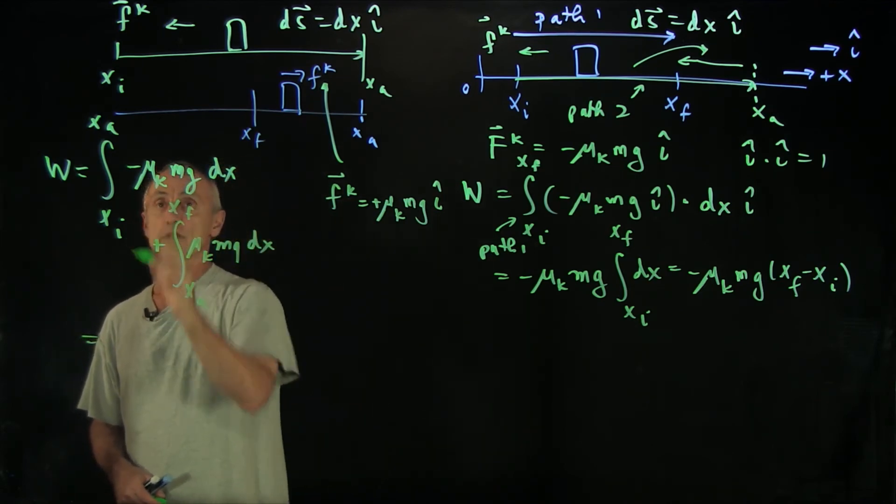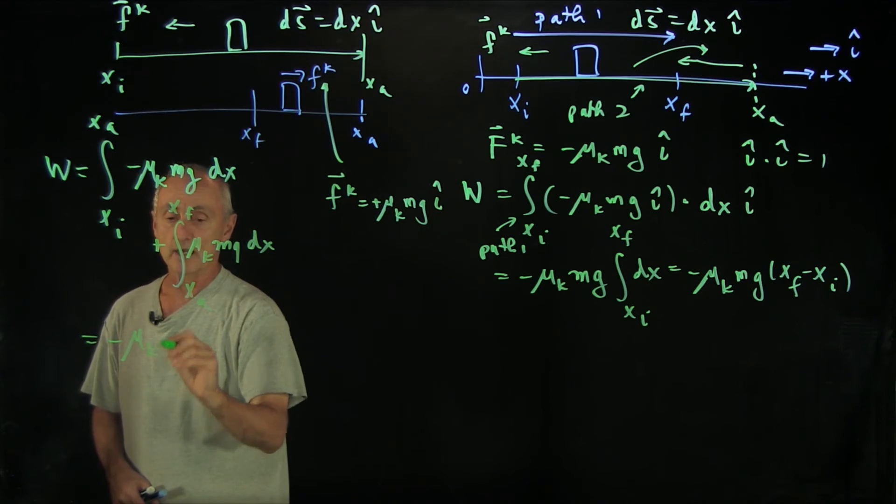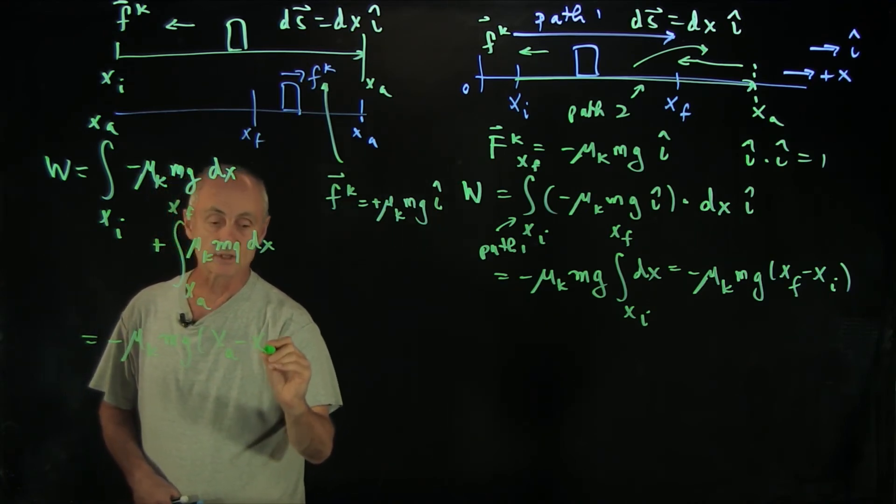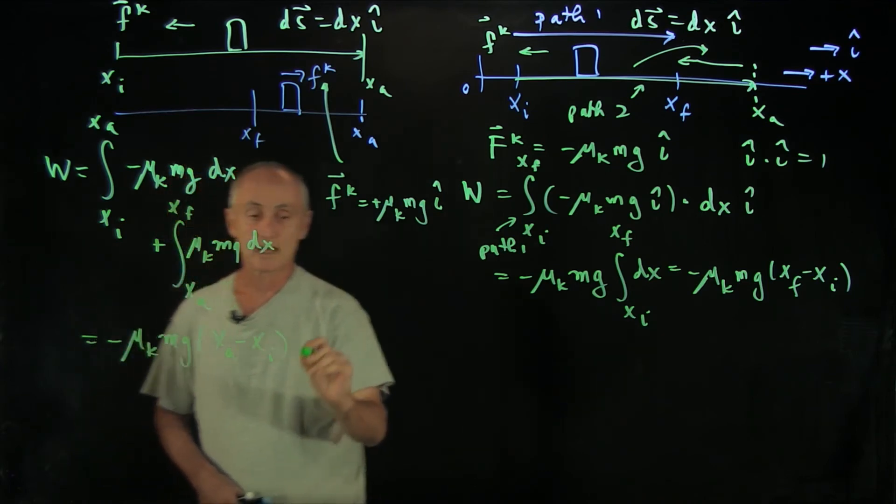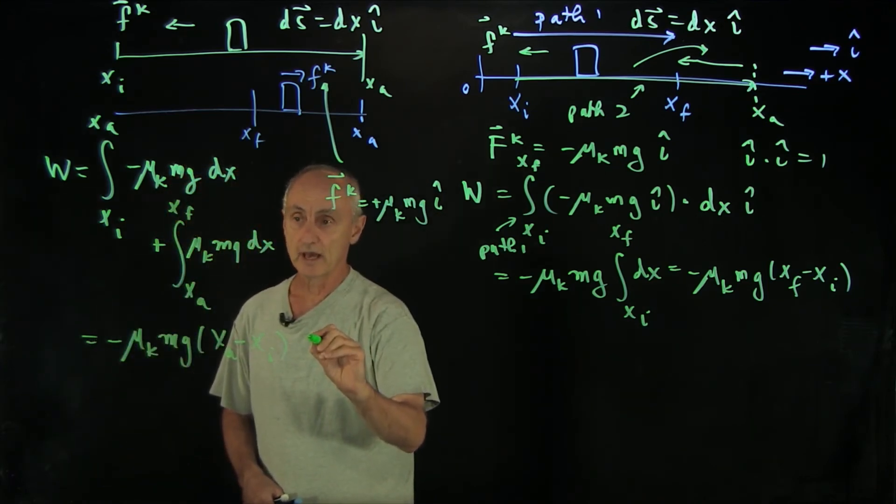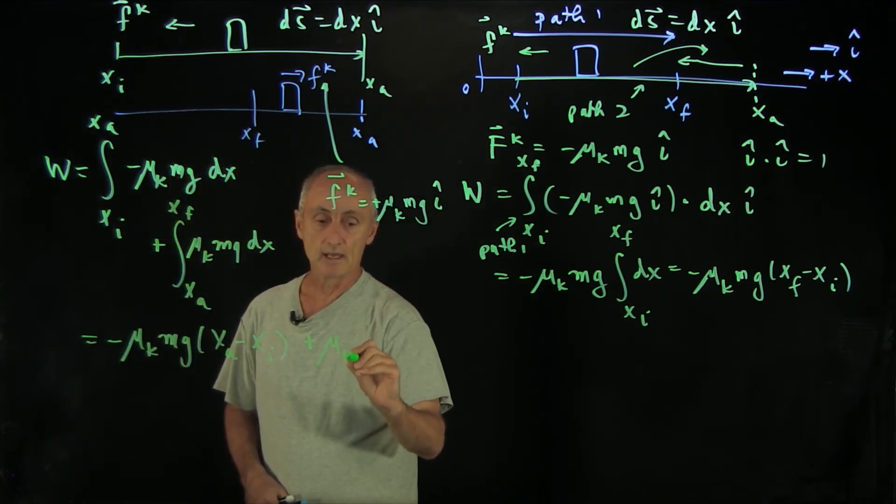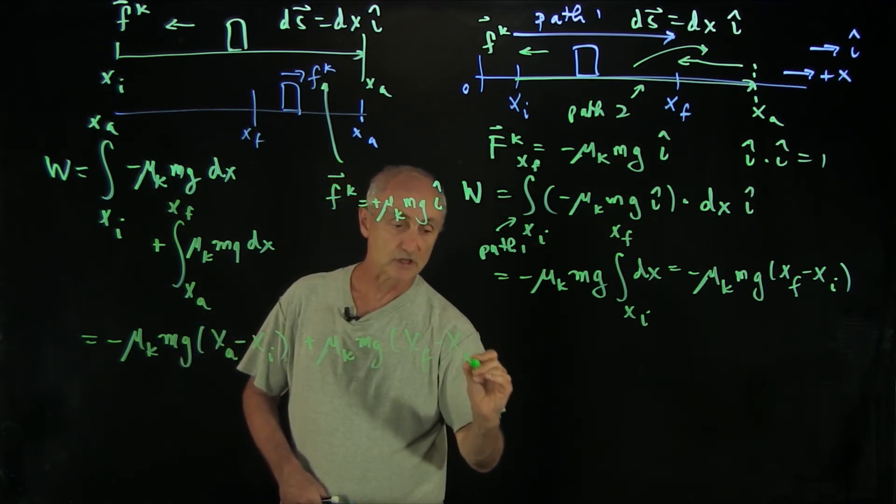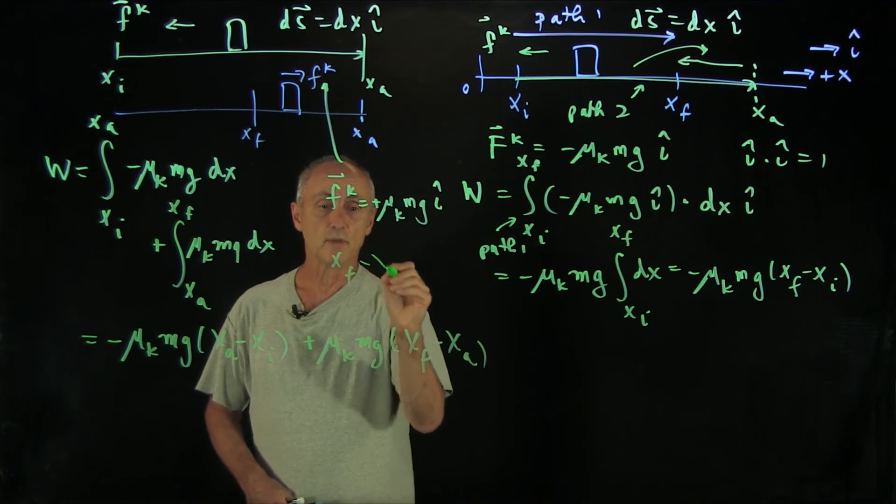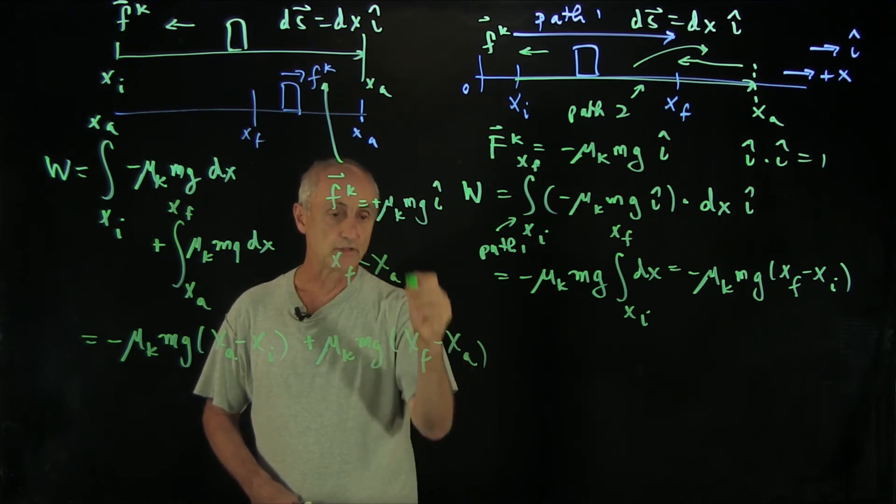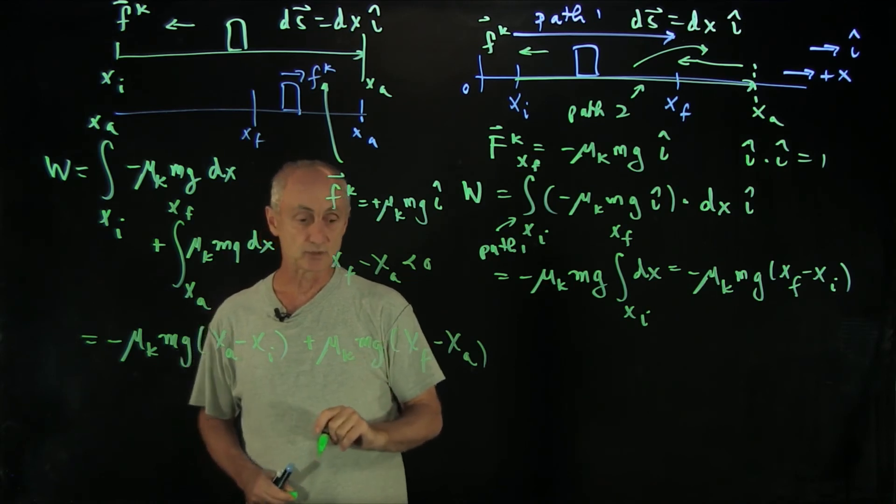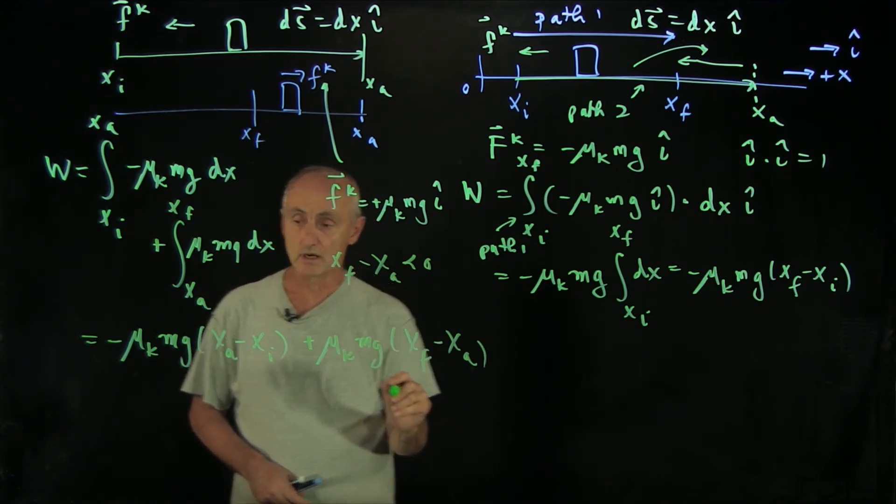Both of these integrals are straightforward to do. This is minus μ_k mg (x_a minus x_initial). And over here, we have plus μ_k mg (x_final minus x_a). Notice x_final minus x_a, rather, is negative. And so both of these integrals are negative, as we expect.